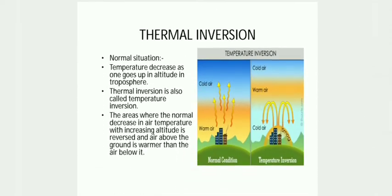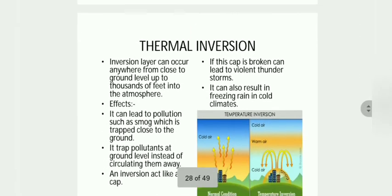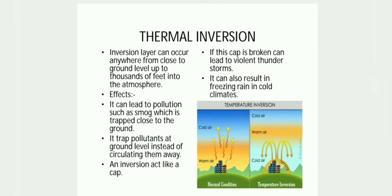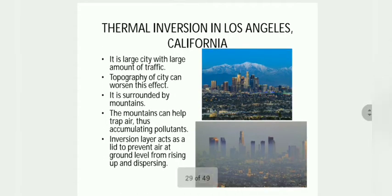Thermal inversion, also called temperature inversion, is a condition in which the normal decrease in air temperature with increased altitude is reversed, and the air above the ground is warmer than the air below it. Thermal inversion can result in pollution which can further cause smog. If the thermal inversion cap is broken, it can lead to violent thunderstorms and freezing rain in cold climates. Los Angeles has large amounts of traffic and is surrounded by mountains, due to which it faces a thermal inversion problem.